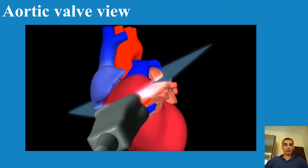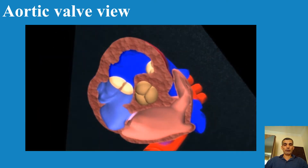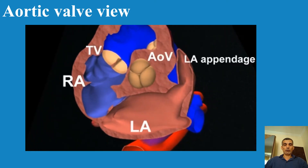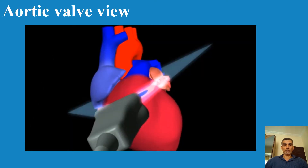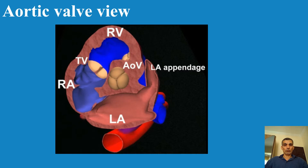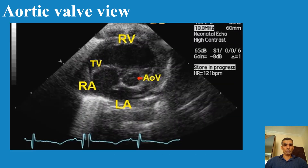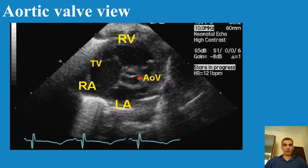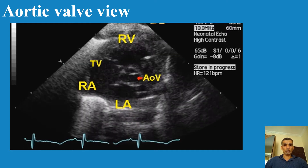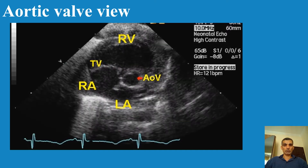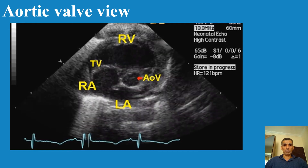In 2D, you see the aortic valve with three cusps, the right ventricle taken from the right atria through the tricuspid valve, the left atria, and possibly the left atrial appendage.